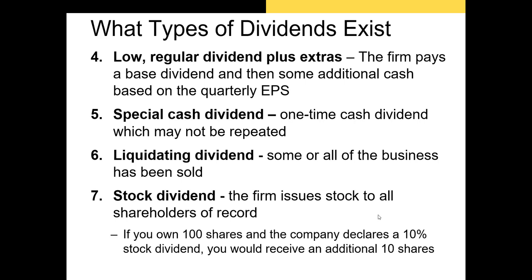Our sixth type of dividend is the liquidating dividend. Liquidating dividends are sometimes seen if a firm enters Chapter 7 bankruptcy, which is liquidation. When a firm enters Chapter 7, the bondholders are paid what they're owed, the government is paid what they're owed, and occasionally employees receive wages already earned. But that typically leaves the shareholders getting the short end of the stick — they receive the residual amount left over after everyone else has been paid.